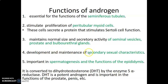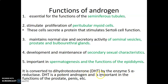Androgens also help in the development and maintenance of the secondary sexual characteristics: growth, widening of the chest, male hair distribution pattern. Androgens also influence hematopoiesis and the epididymis. Androgens are converted to dihydrotestosterone by an enzyme called 5-alpha reductase. This dihydrotestosterone is an androgen important in the function of male reproductive organs such as the prostate and the penis.